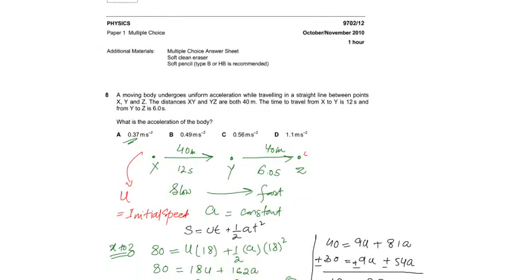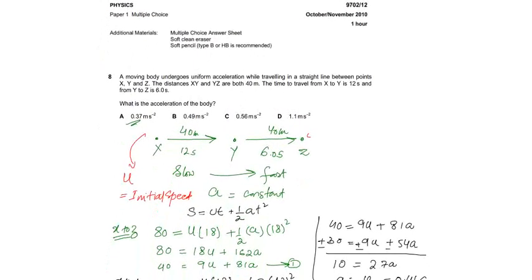A moving body undergoes uniform acceleration while traveling in a straight line between points X, Y, and Z. The distance XY and YZ are both 40 meters. The time to travel from X to Y is 12 seconds and from Y to Z is 6 seconds.